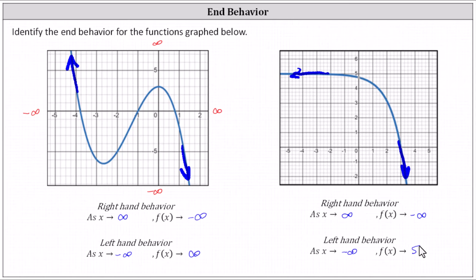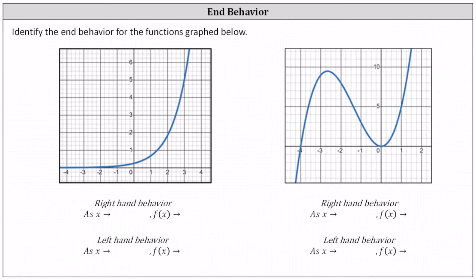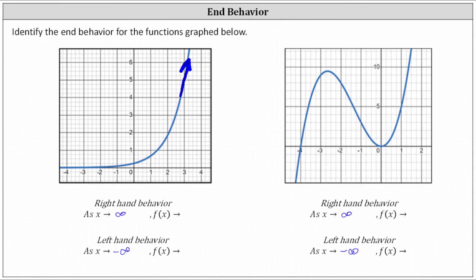Let's look at two more examples. For right-hand behavior, x is always approaching positive infinity, and for left-hand behavior, x is always approaching negative infinity. For the graph on the left, as x approaches infinity, we can think of moving right along the function. As we move right, notice the graph goes up indefinitely, which indicates the y values increase without bound and approach positive infinity. The right-hand behavior is: as x approaches infinity, f of x approaches infinity.